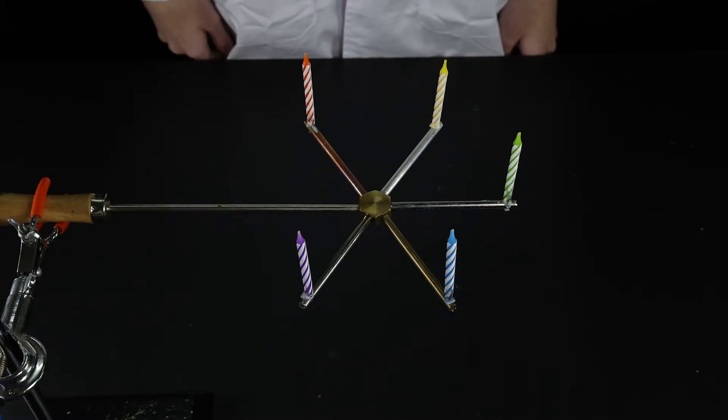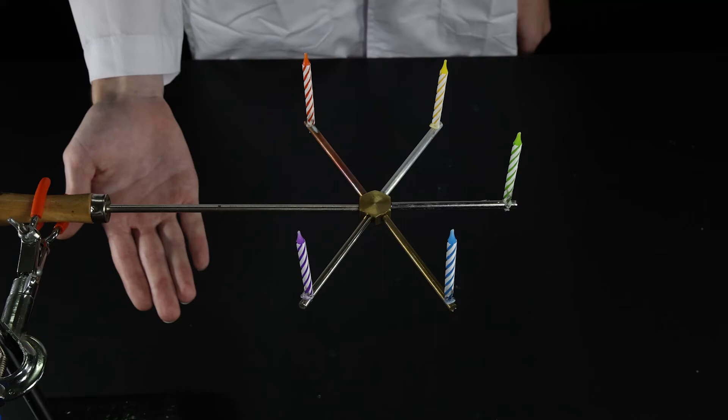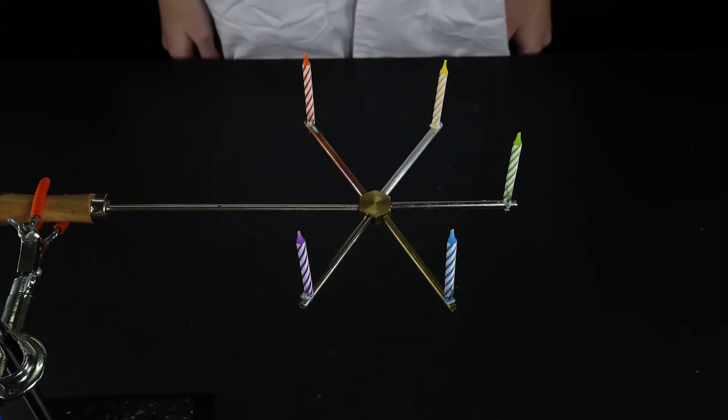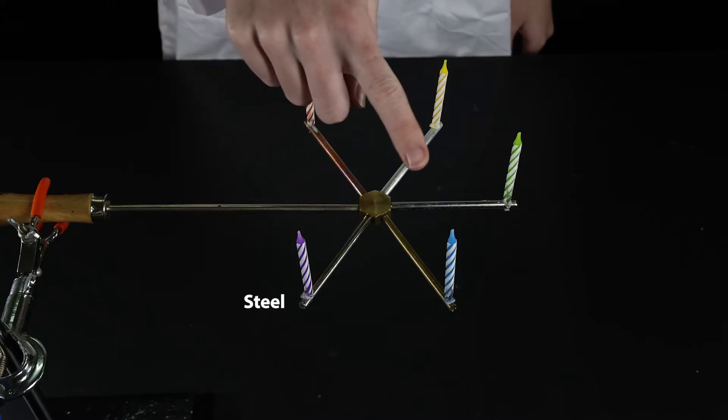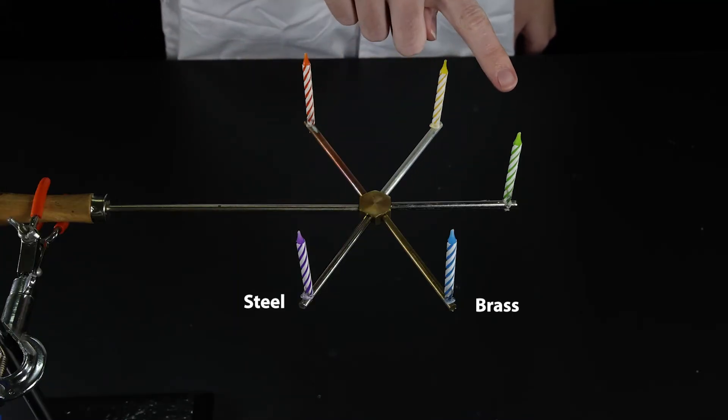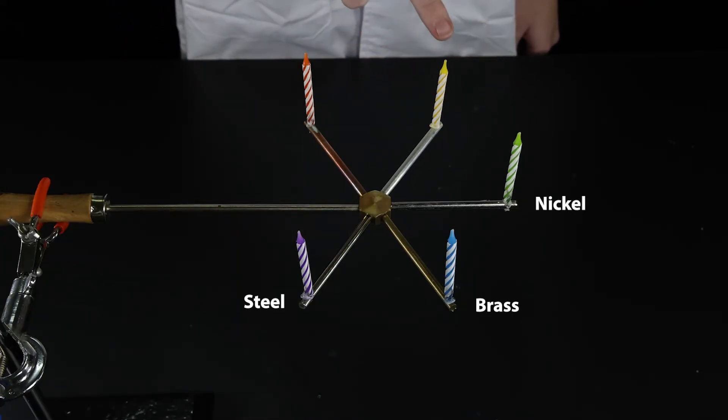This device consists of five types of metal rods of the same thickness and length. The metals are steel, brass, nickel, aluminum and copper.